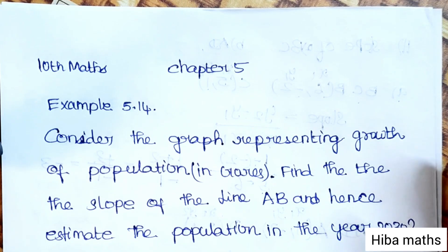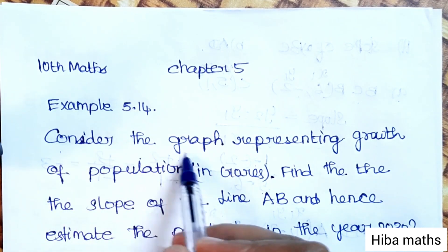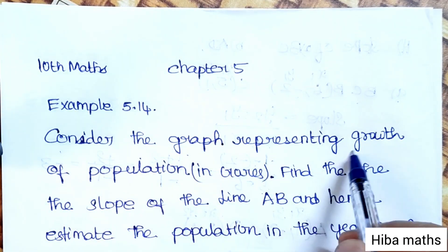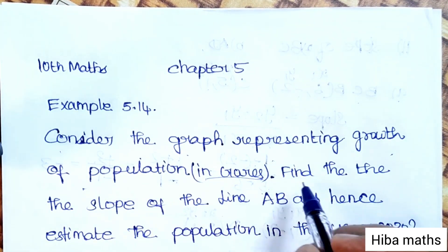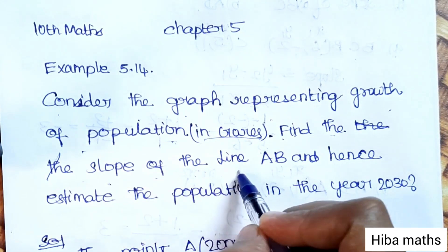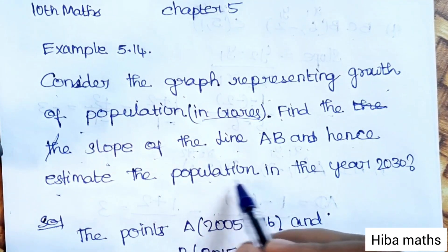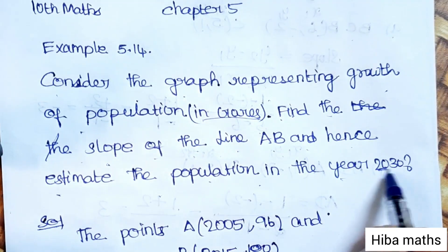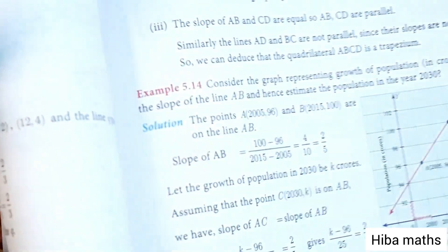Hello students, welcome to Hibamaks. 10th Standard Math, Chapter 5, Example 5.14: Consider the graph representing growth of population in crores. Find the slope of line AB and hence estimate the population in the year 2030. Look at the graph in the book.